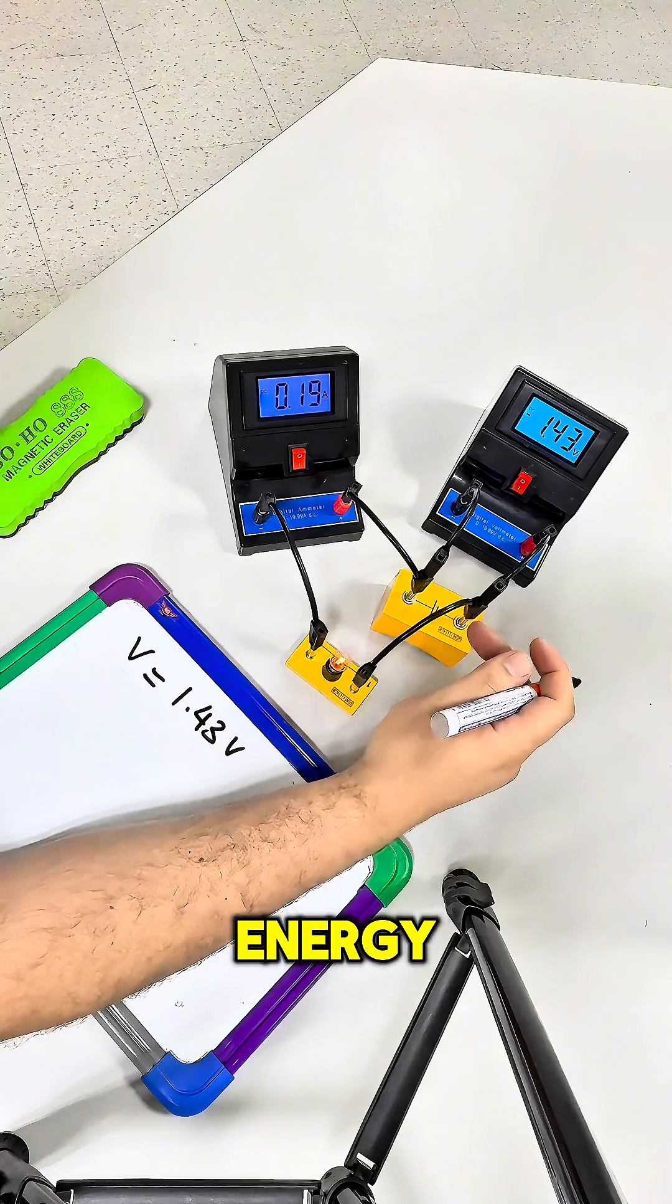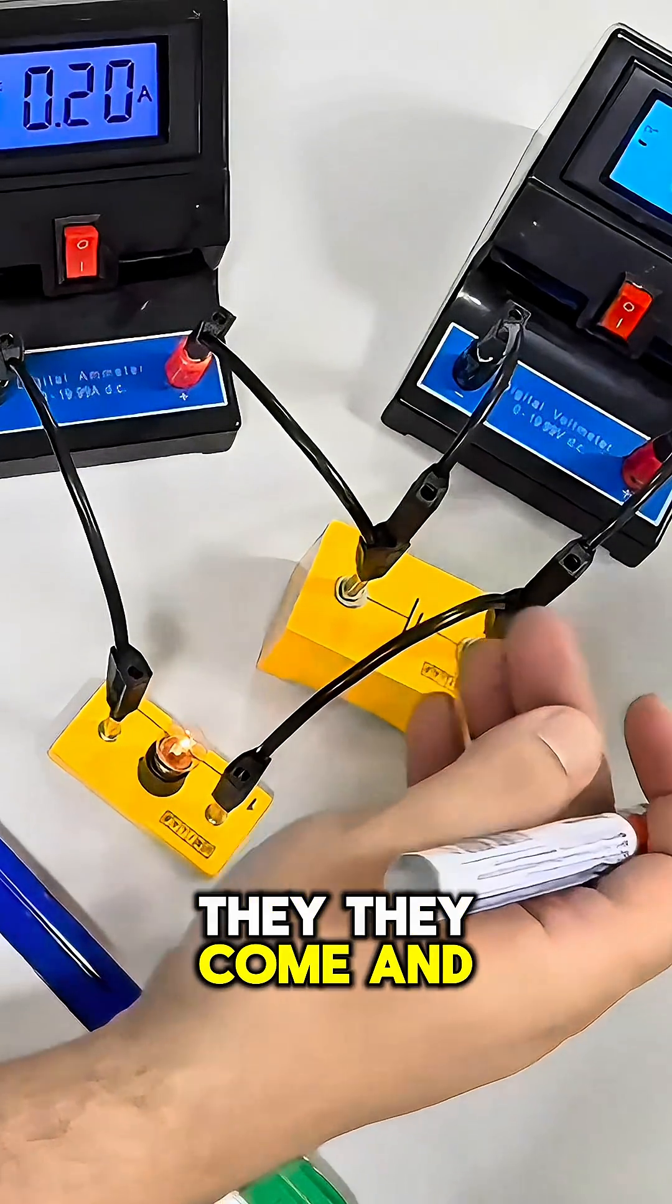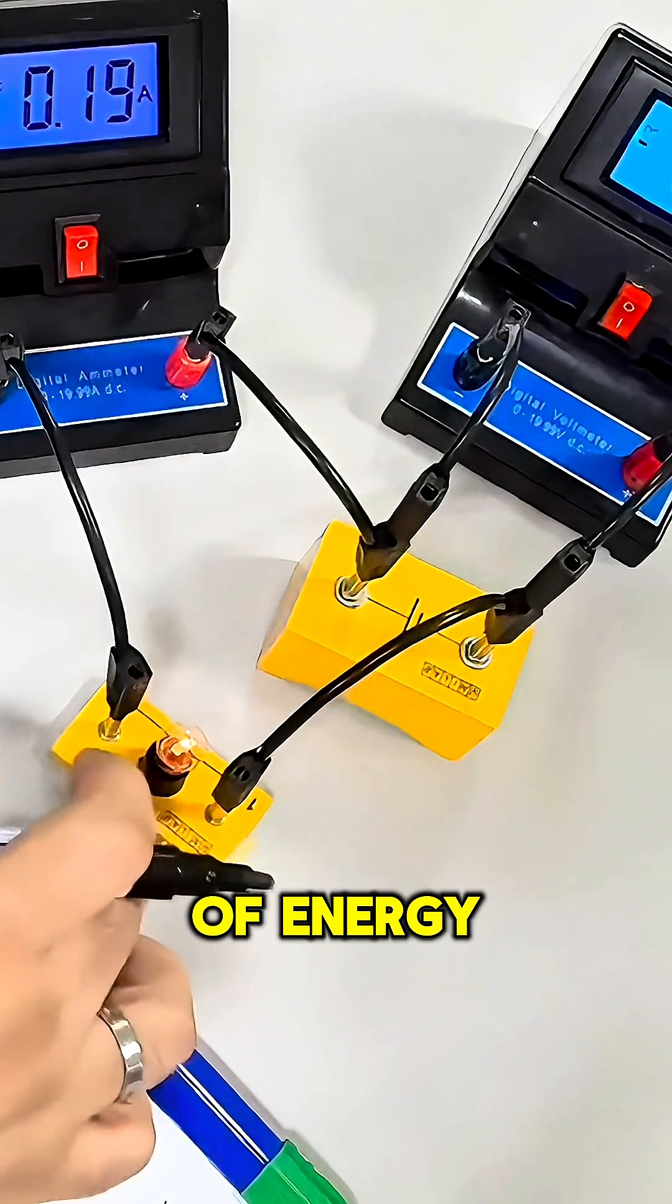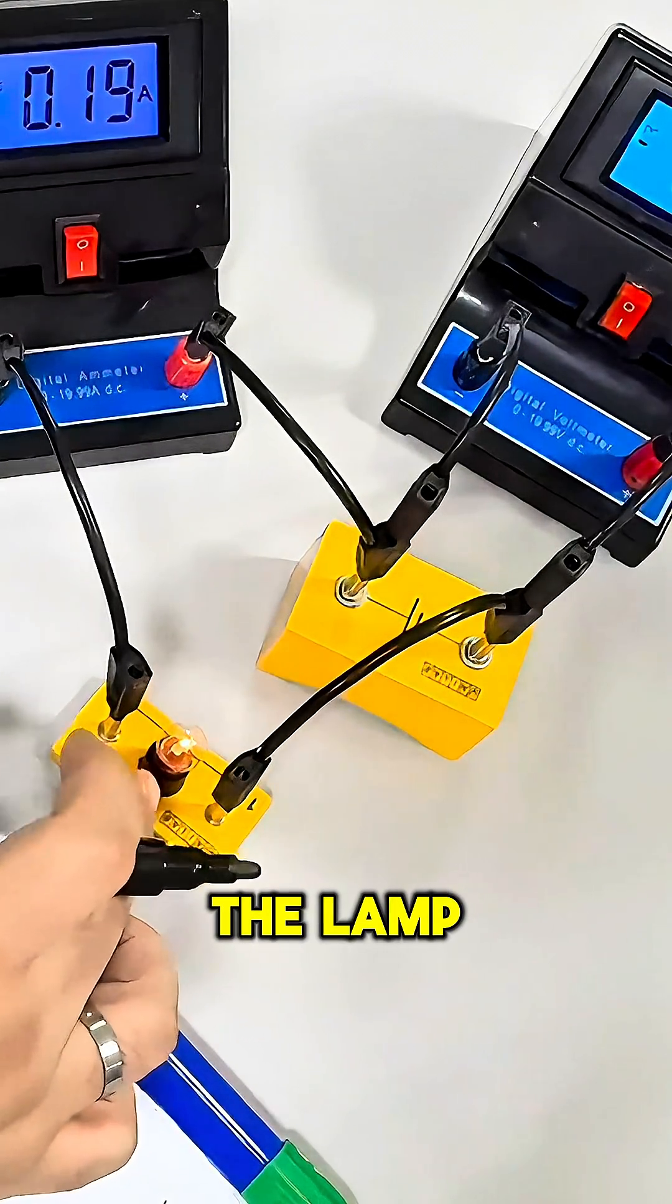The electrons or electric charges move through the wire, and there's an energy transfer where energy changes inside the lamp.